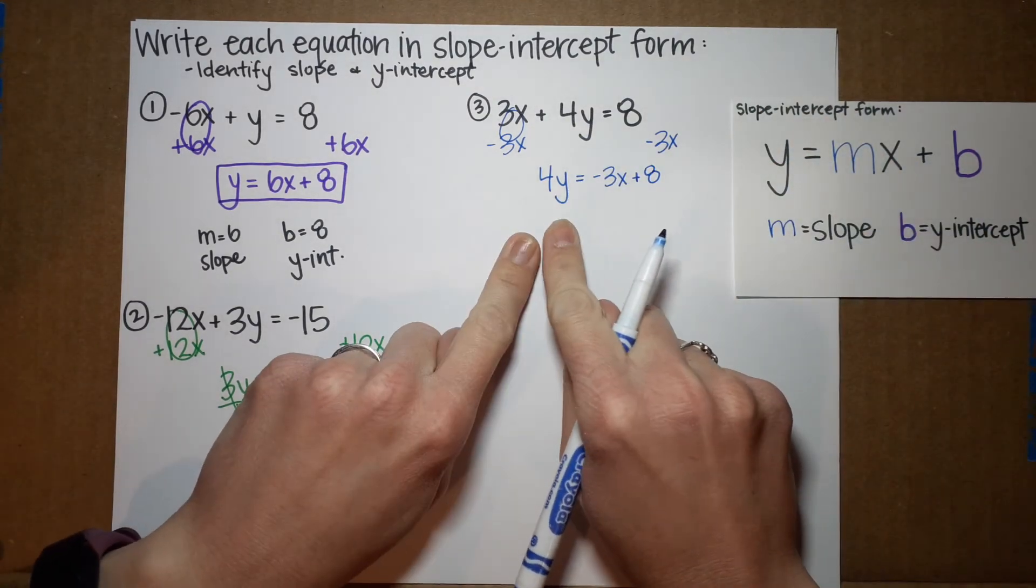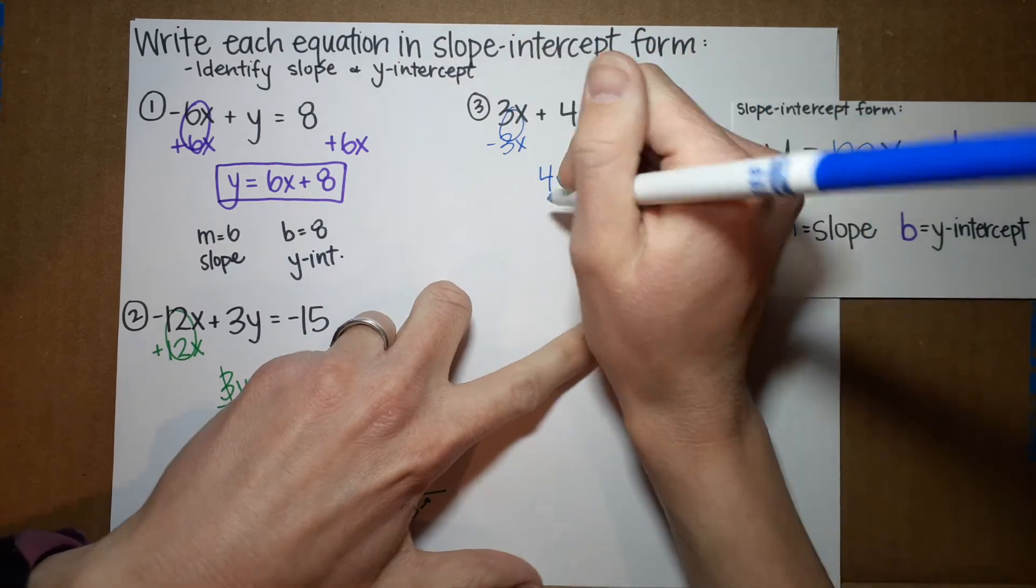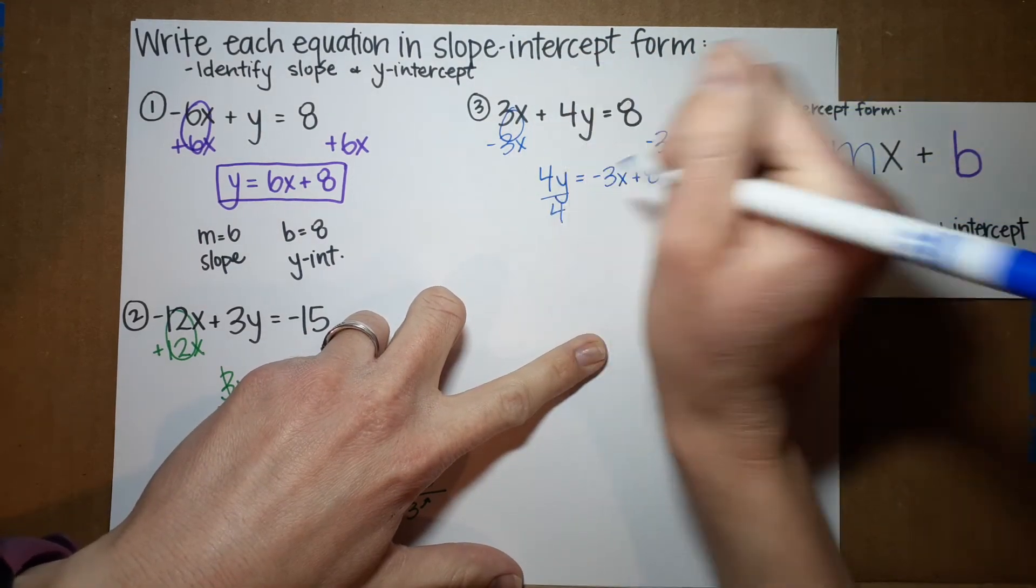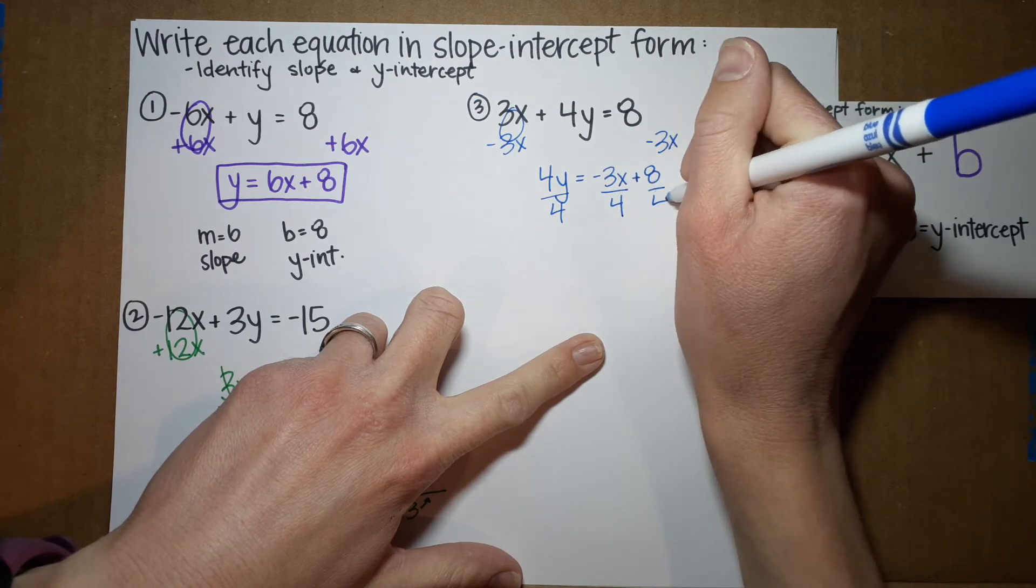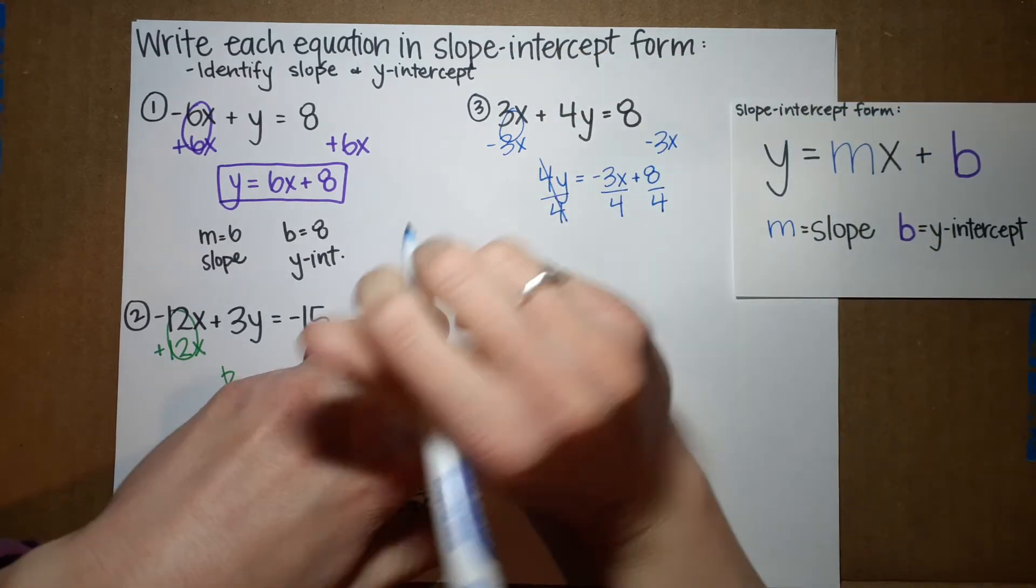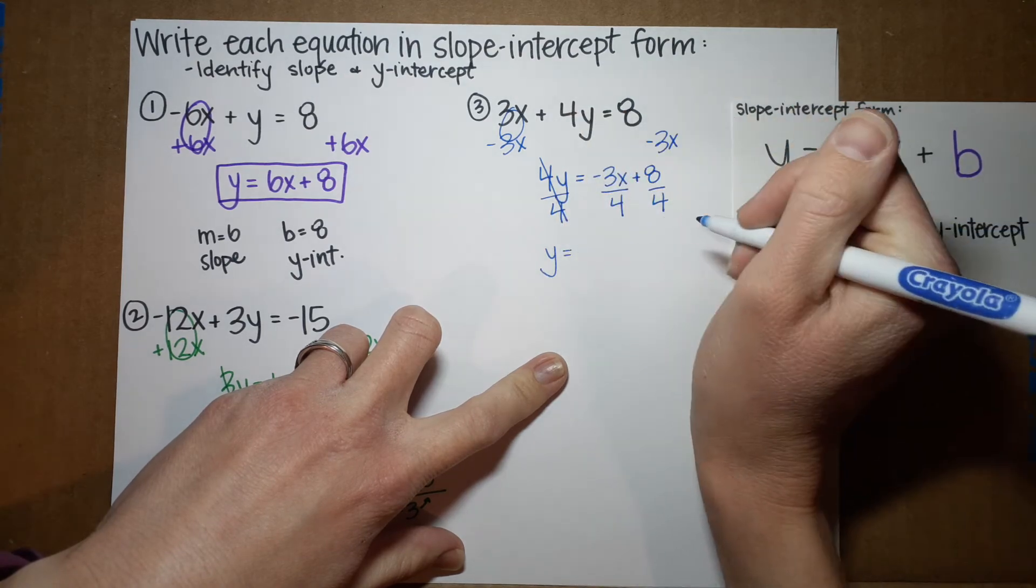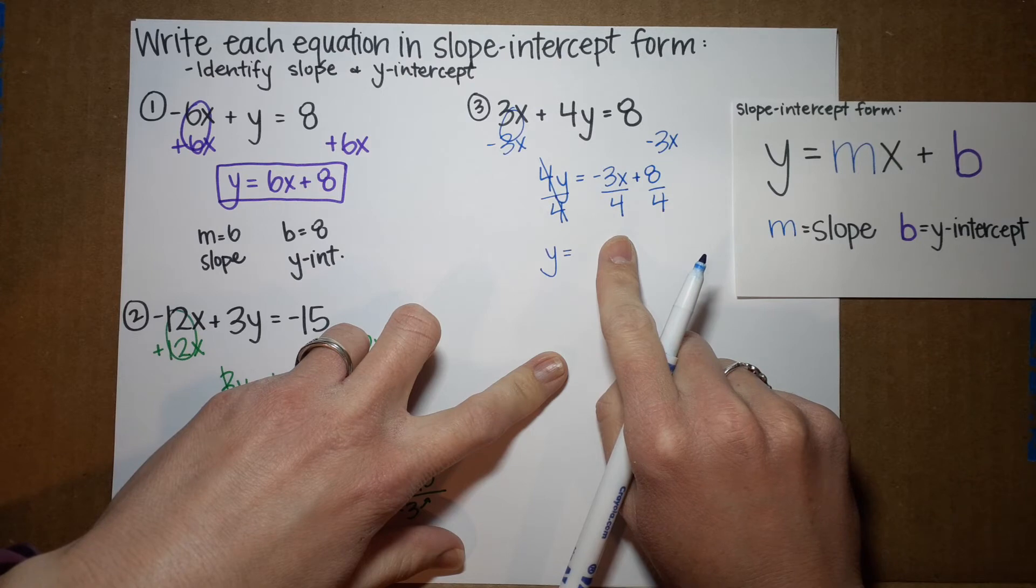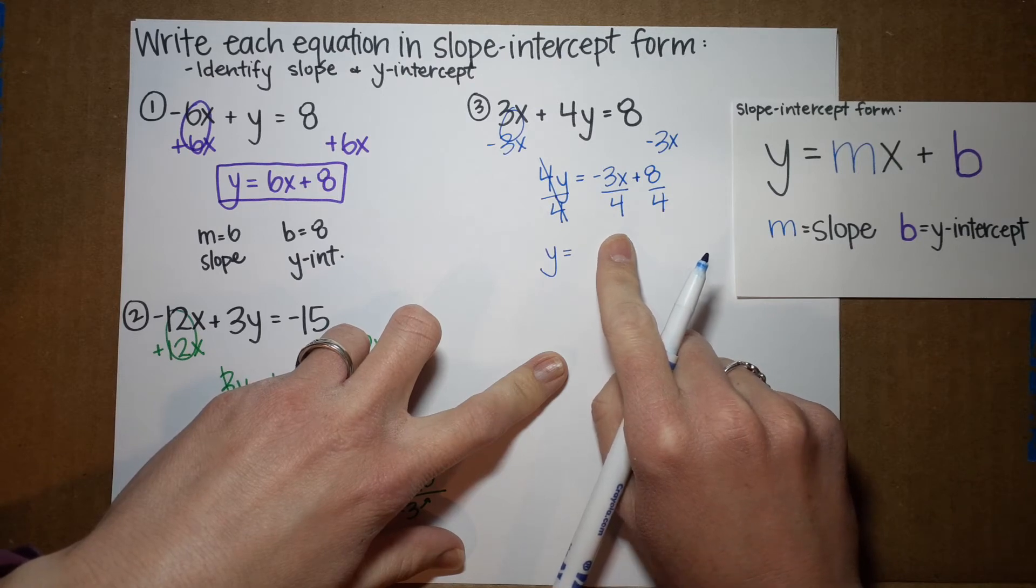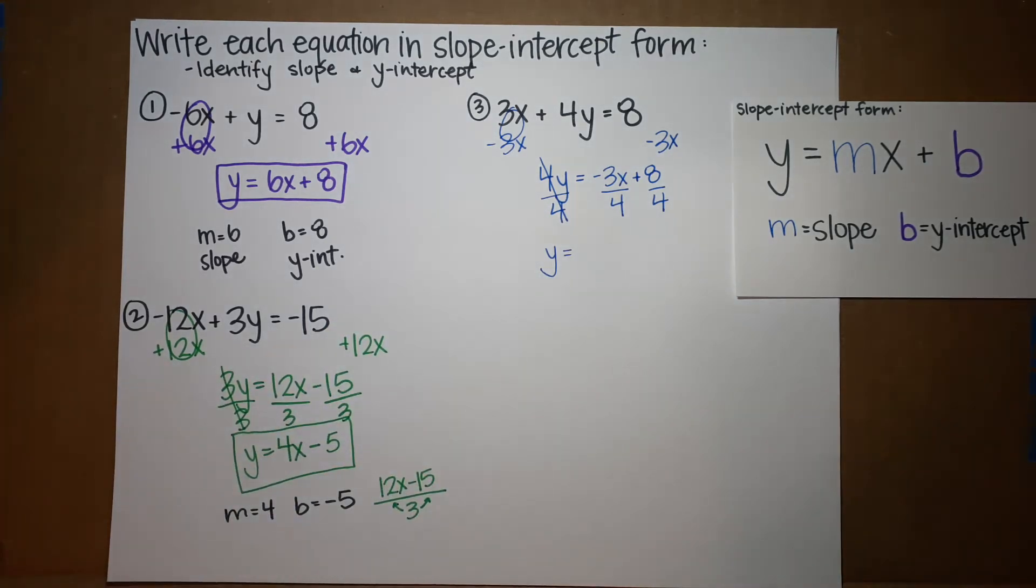All right. We're almost done, but this y has this 4 here that we don't want. It's being multiplied. So, I'm going to divide by 4. If I do it over here, I got to do it over here. All right. 4 divided by 4 is 1. So, I'm left with 1y or just y equals. Oh, crap. What the heck am I supposed to do with that? Okay. It's not that bad. It's a fraction. Fractions get a bad rap. They're not that bad. They help us in our daily lives.